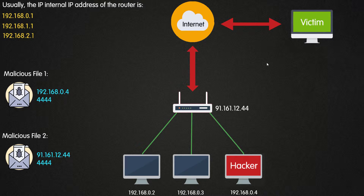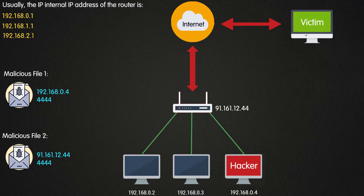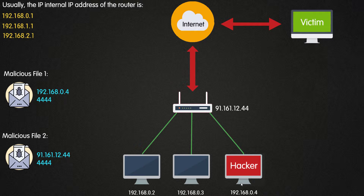If we send the second malicious file to the victim, it contains the hacker's public IP address. When the victim clicks it, their OS tries to connect to that public IP on the specified port. The connection reaches the router but stops there because the router doesn't know what to do with it. If we enable port forwarding on the router — for example, telling it to forward all requests on port 444 to the hacker's machine — and the hacker has a listener running, they will get the reverse connection.